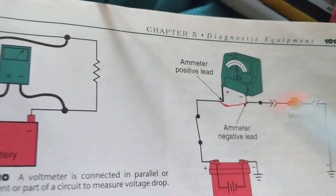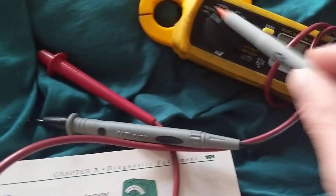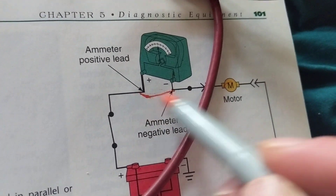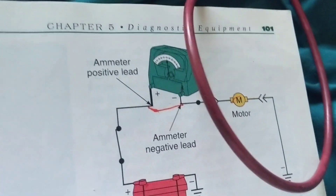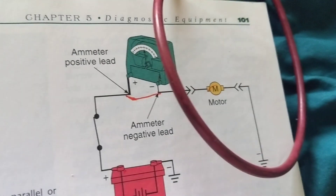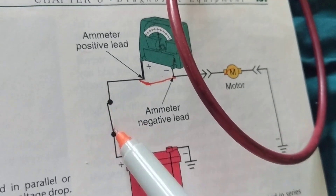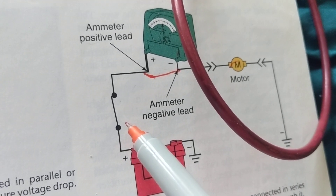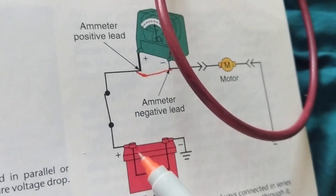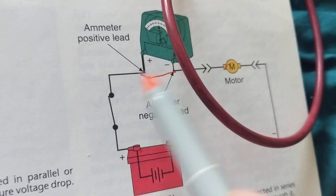Alternatively, using a clamp meter as I've shown in other videos — I leave the circuit intact, leaving the connection undisturbed, and place the clamp jaws around a wire. The reason you don't have to break the circuit is that when current flows through a wire it creates a magnetic flux field, and the clamp meter detects how much current is flowing from that field — much easier than breaking the connection.